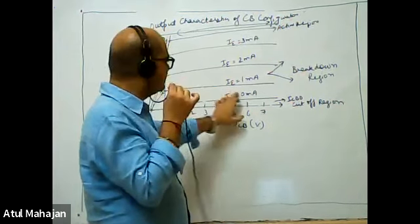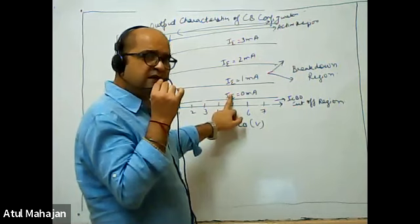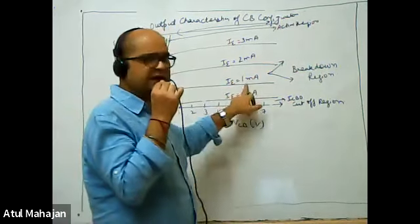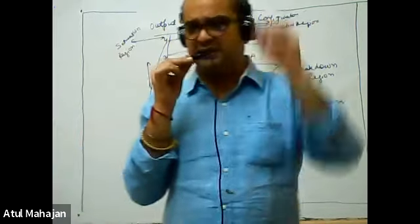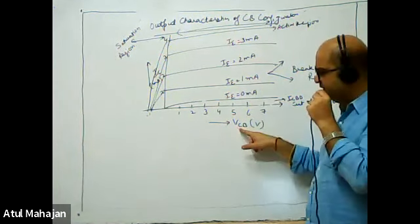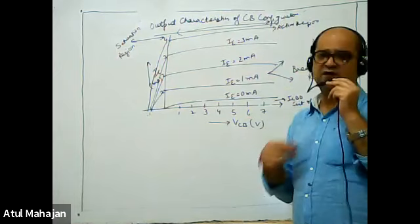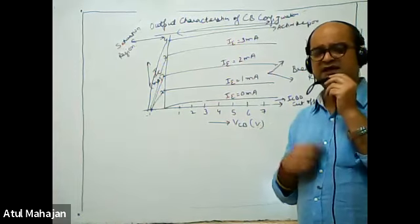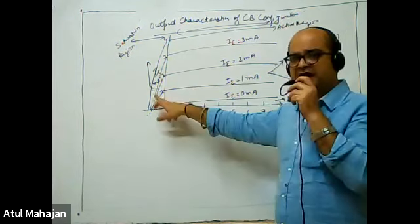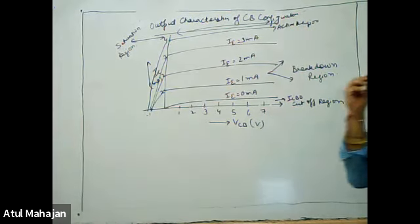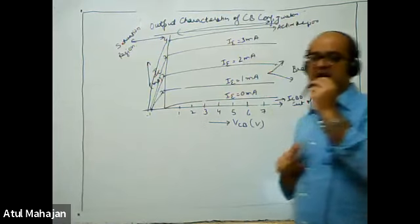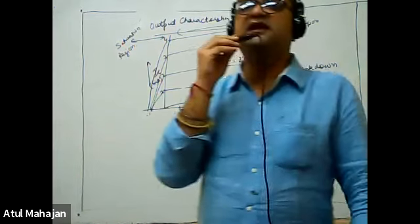When the emitter current is at 0.0 milliampere we are in the cutoff region. As emitter current increases to 1 milliampere and is held constant, we then increase VCB further. We observe that increasing VCB has very little effect on IC, because collector current is not dependent on the reverse bias VCB voltage.